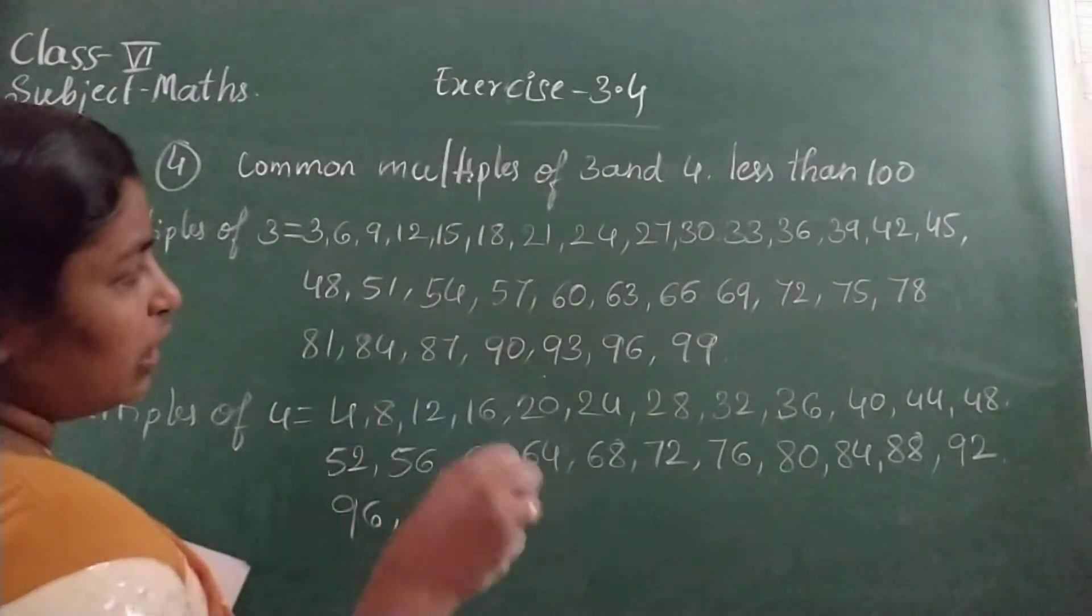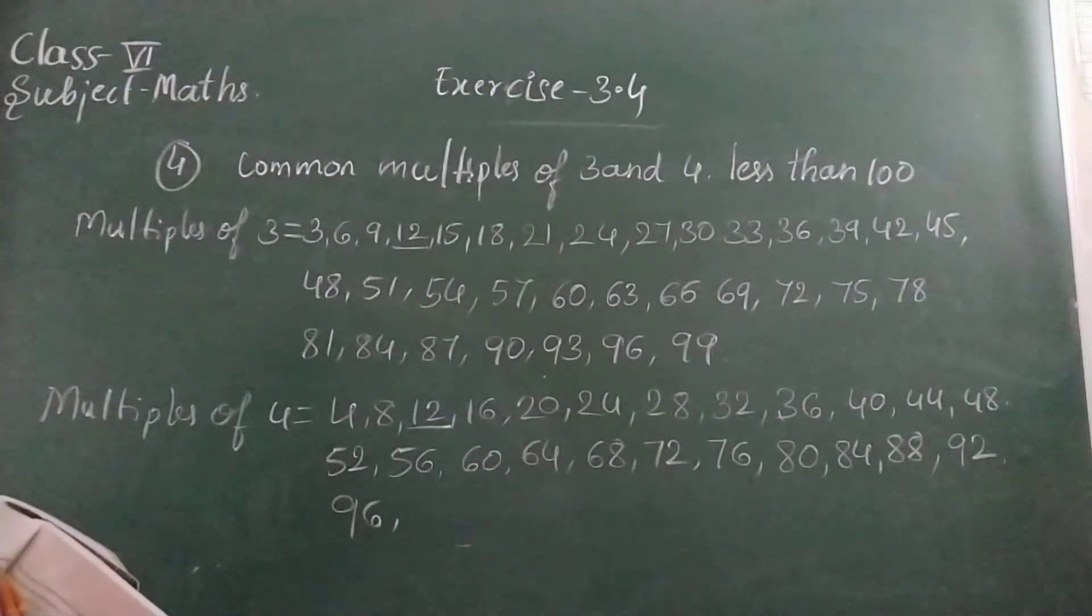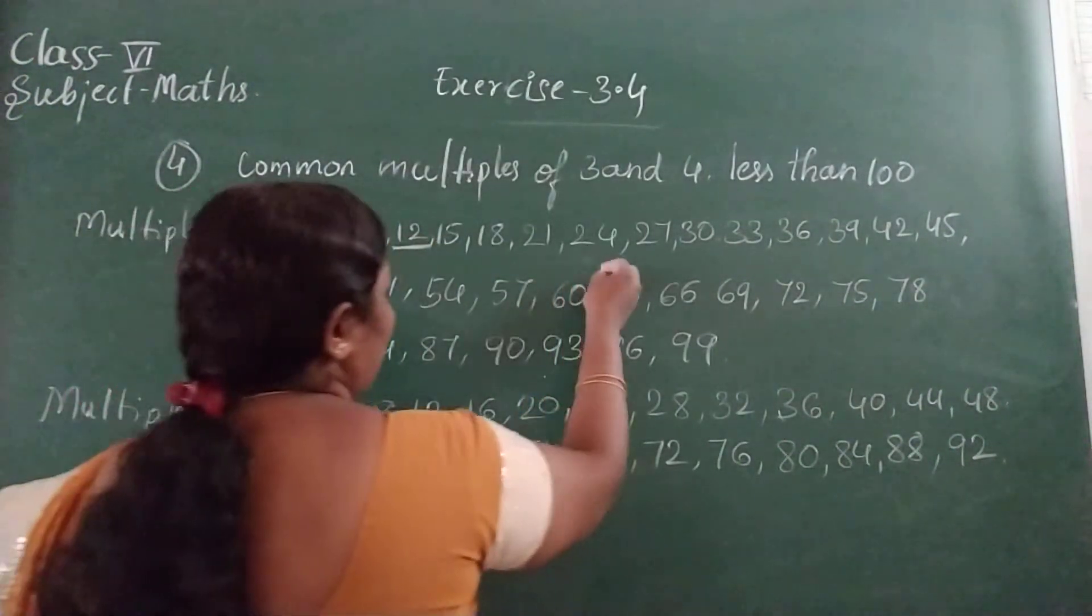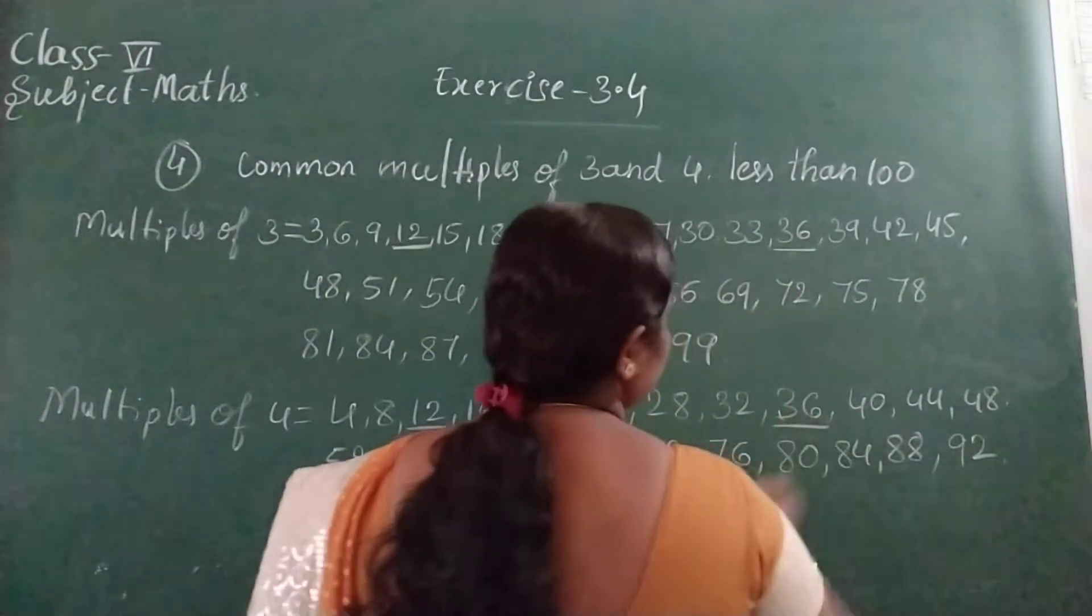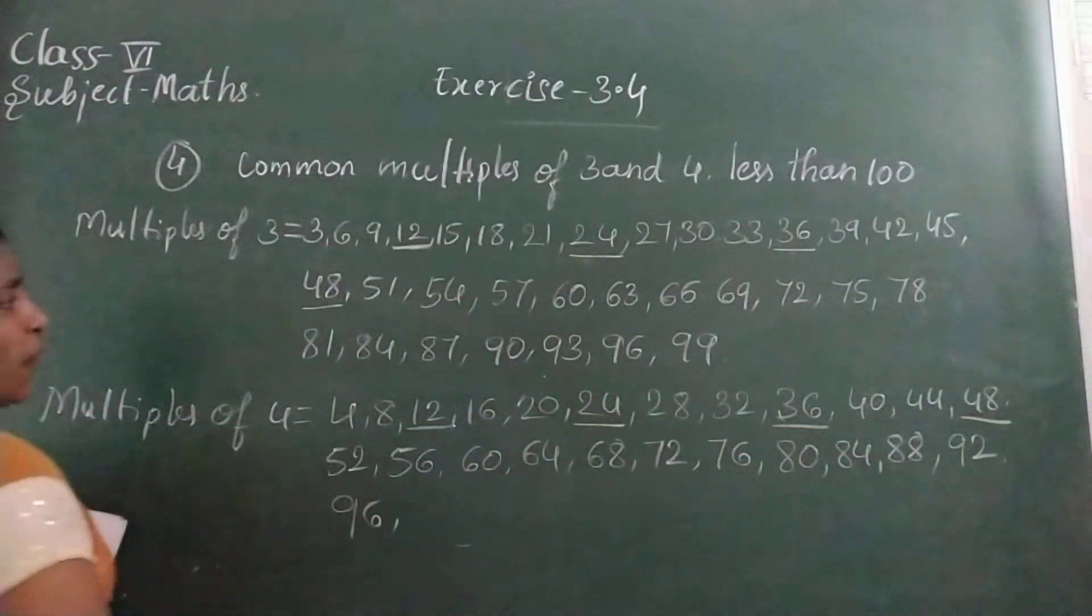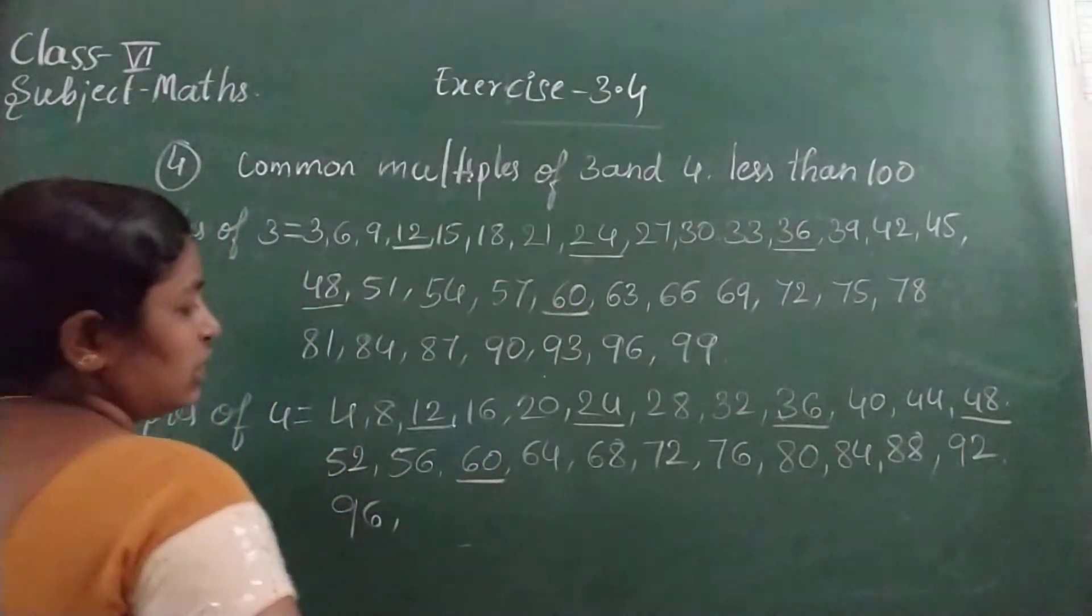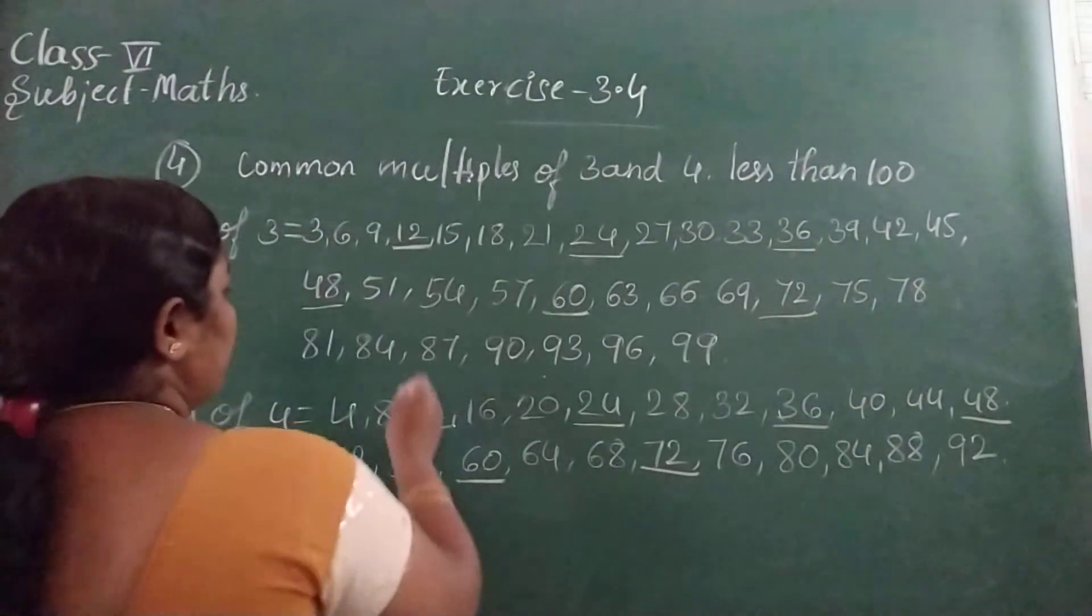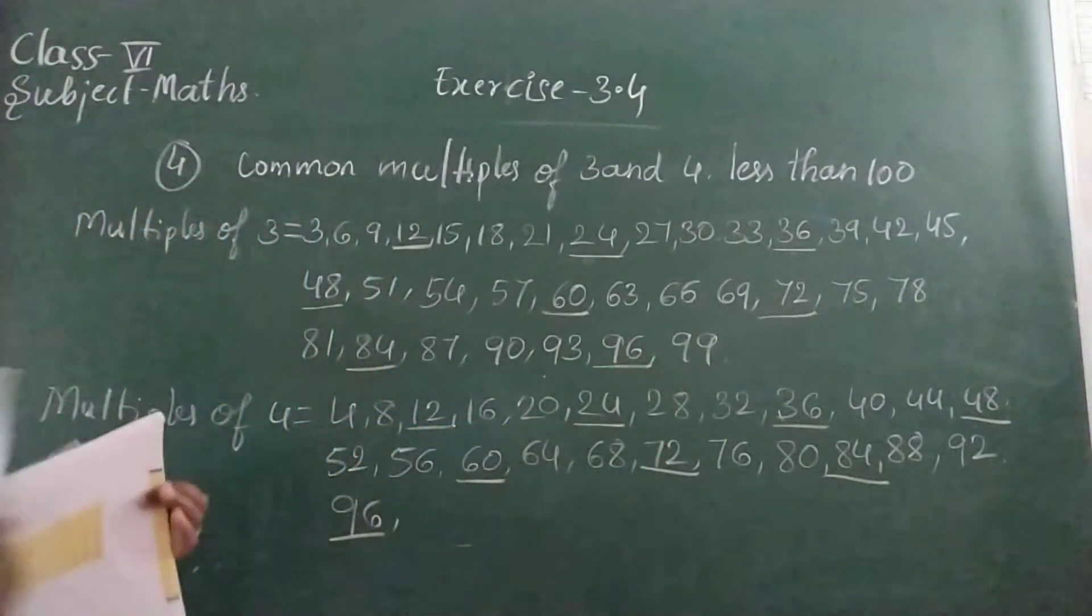Now, underline the common multiples. 4 is not there, 6, 9, 12 is there, yes. First one is 12. Then 24, 24. Next, 36, 36. Then 48, 48. Next 60, 60. Then 72, 72. Then 84. Then 96, 96. These are the common multiples.